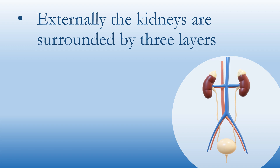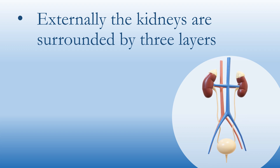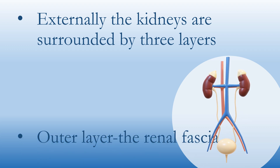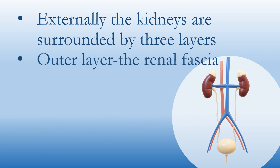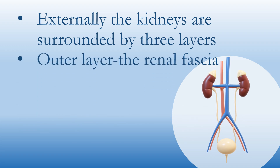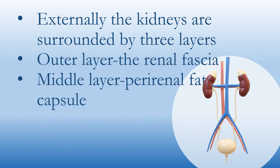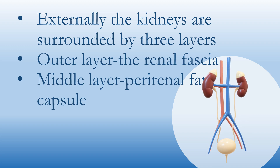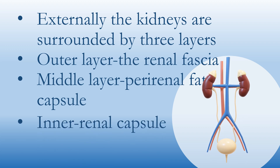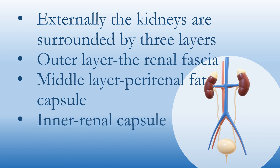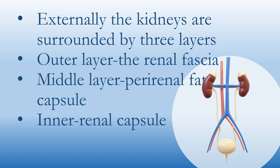Externally, the kidneys are surrounded by three layers: the outer layer is the renal fascia, the middle layer is the perirenal fat capsule, and the inner one is the renal capsule.